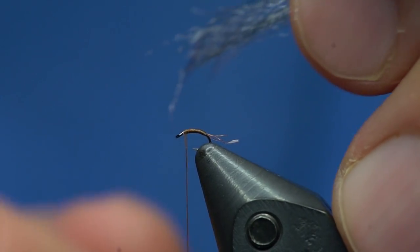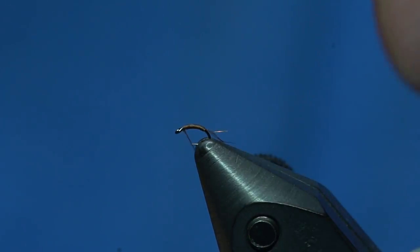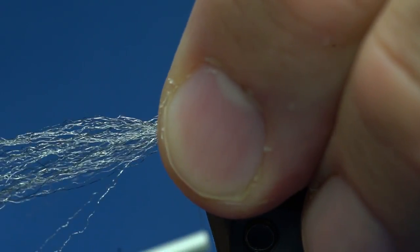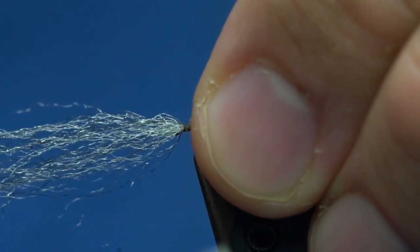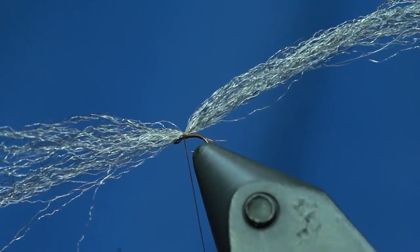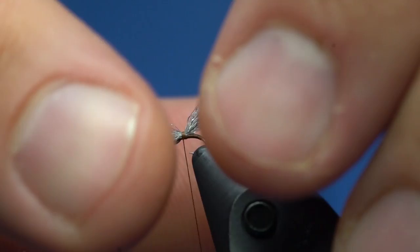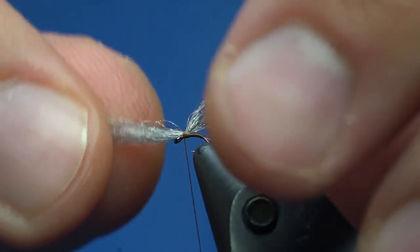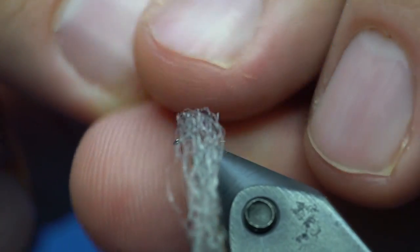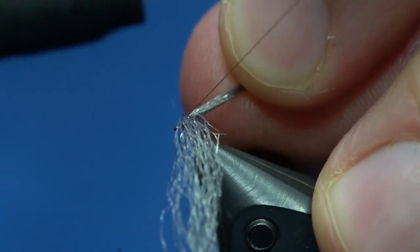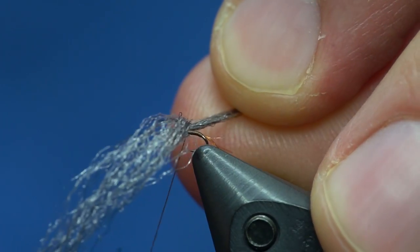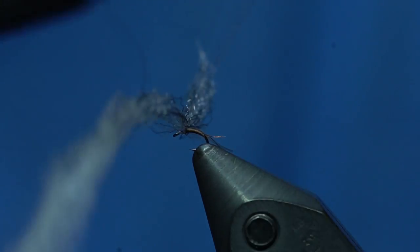To tie this EP trigger point in, I'm just going to do maybe three snug wraps so that it's parallel to the hook shank. I'm going to grab the front section, pull it toward me to make it perpendicular, and then take my thread and wrap it between the two so that I'm basically figure-eighting this.